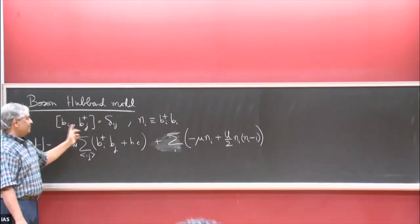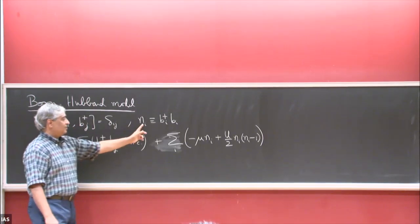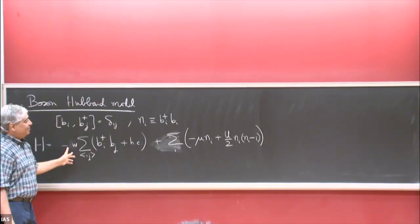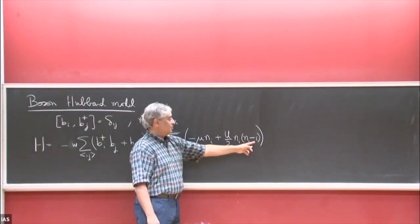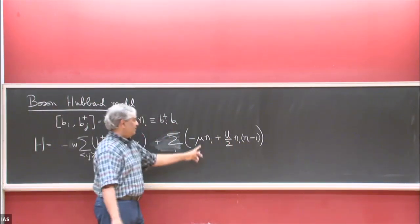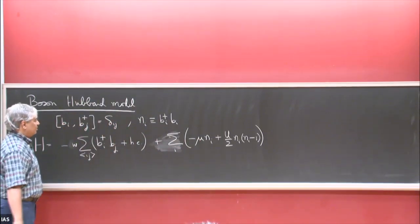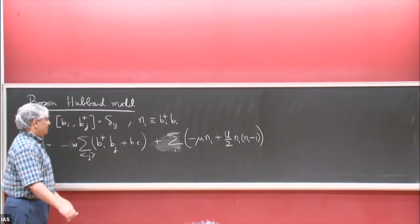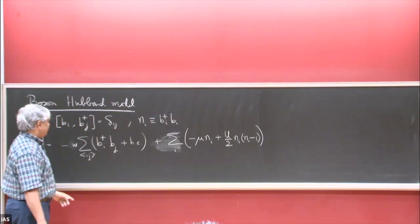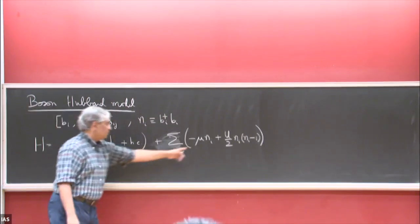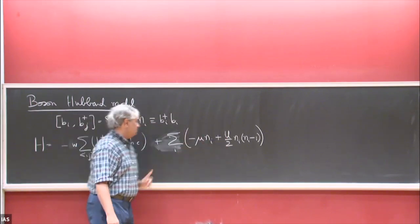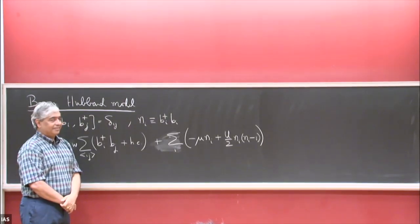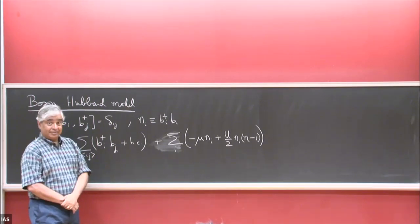These are the Bose operators with the canonical Bose commutation relation. N_i is the boson number. There's a hopping matrix element, which I'll call W. Repulsion between the bosons — any pair of bosons has a repulsion energy U — and mu is the chemical potential. So we want to understand the phase diagram of this model at zero temperature as a function of two parameters: the ratio of mu to W and the ratio of U to W. That already gives you quite an interesting structure.